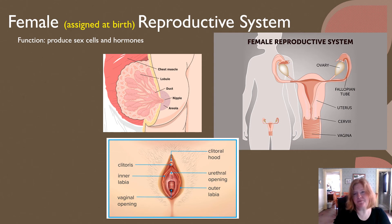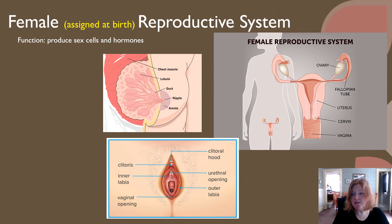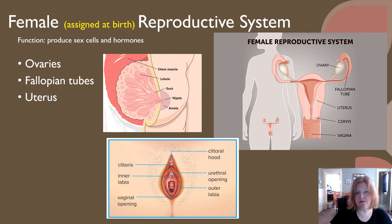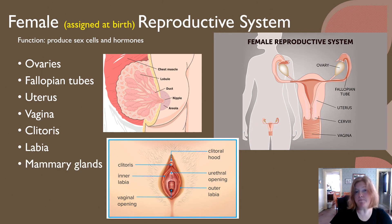The female-assigned-at-birth reproductive system also functions to produce sex cells and hormones, but also provides a location for the internal development of an embryo and fetus, and for the production of milk through mammary glands. It includes ovaries, fallopian tubes — where an egg would be fertilized — the uterus, the vagina, the clitoris, labia, and mammary glands.